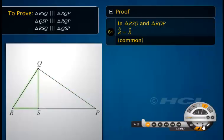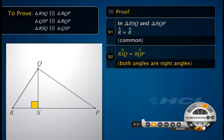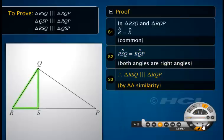Observe that in triangles RSQ and RQP, angle R is common. Also, angles RSQ and RQP are equal as both measure 90 degrees. Therefore, triangle RSQ is similar to triangle RQP by AA similarity.